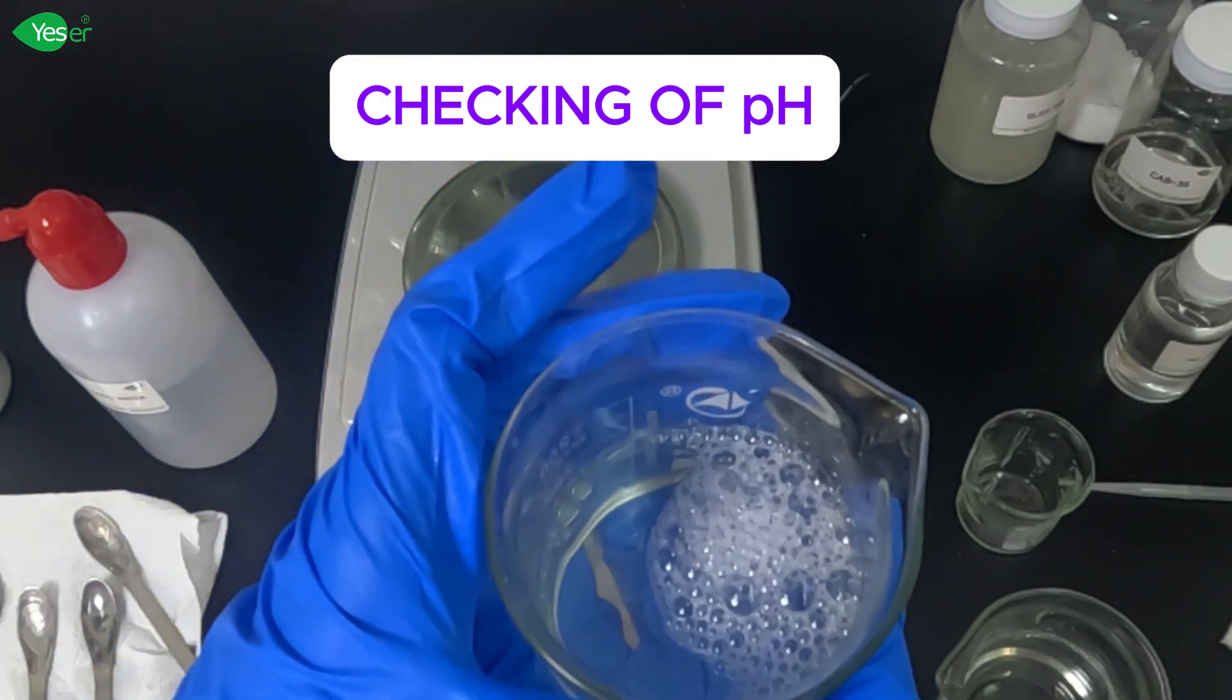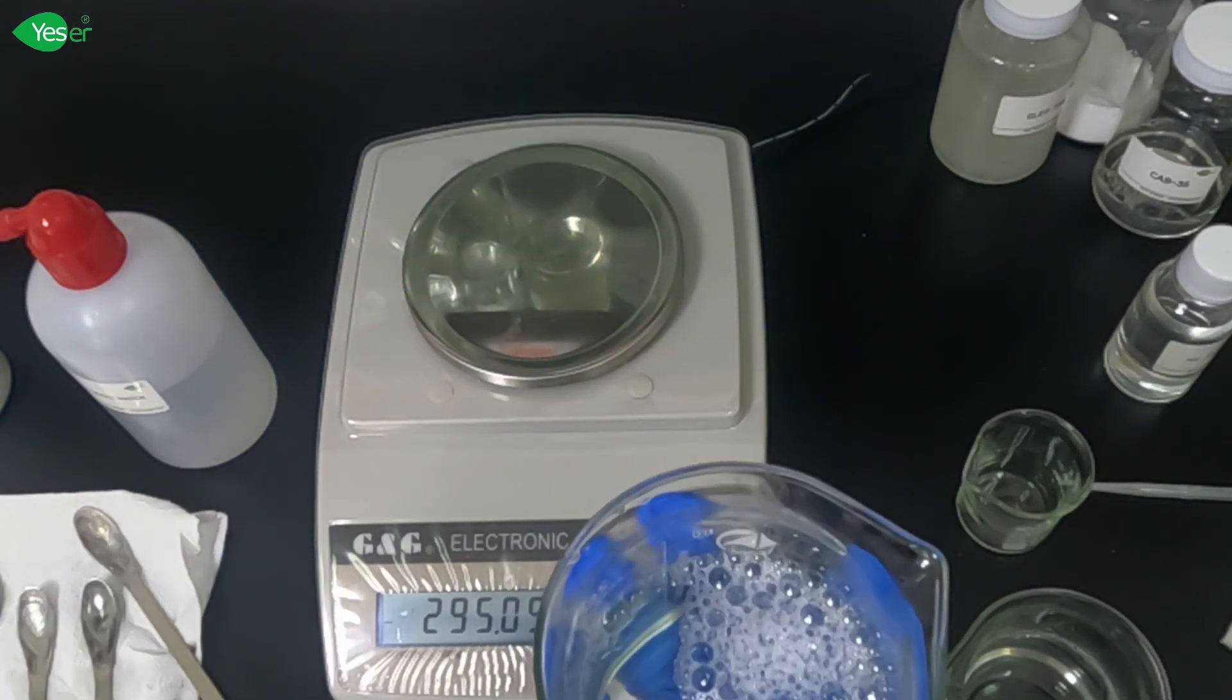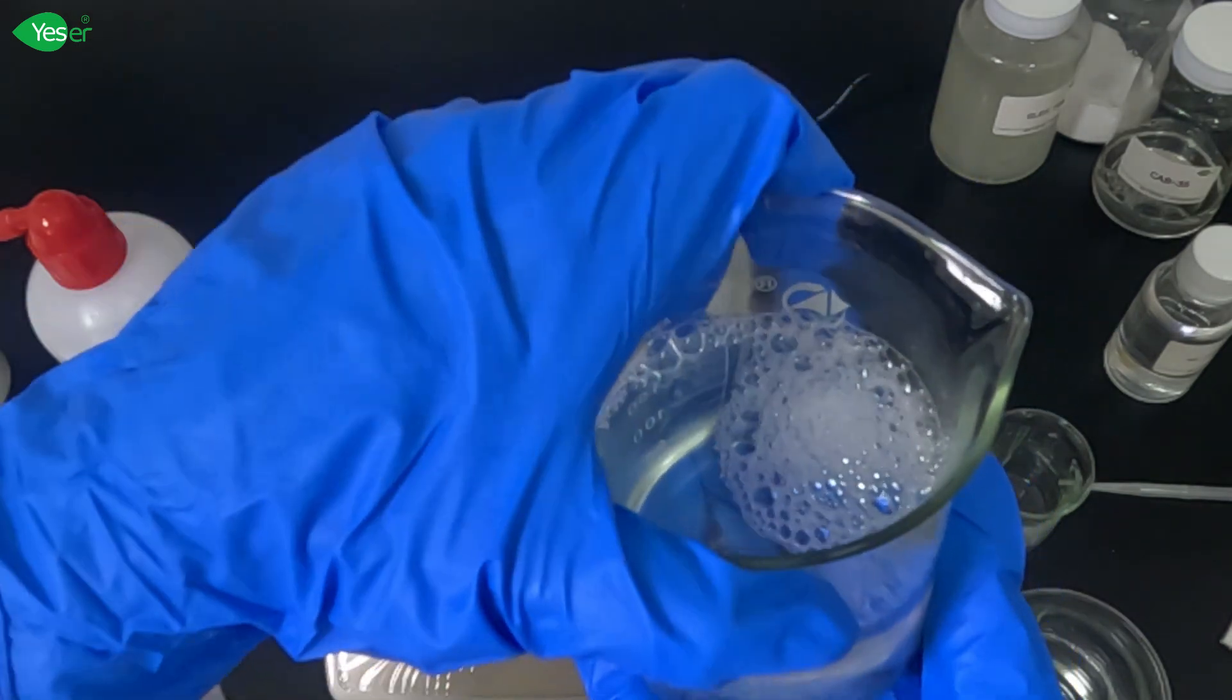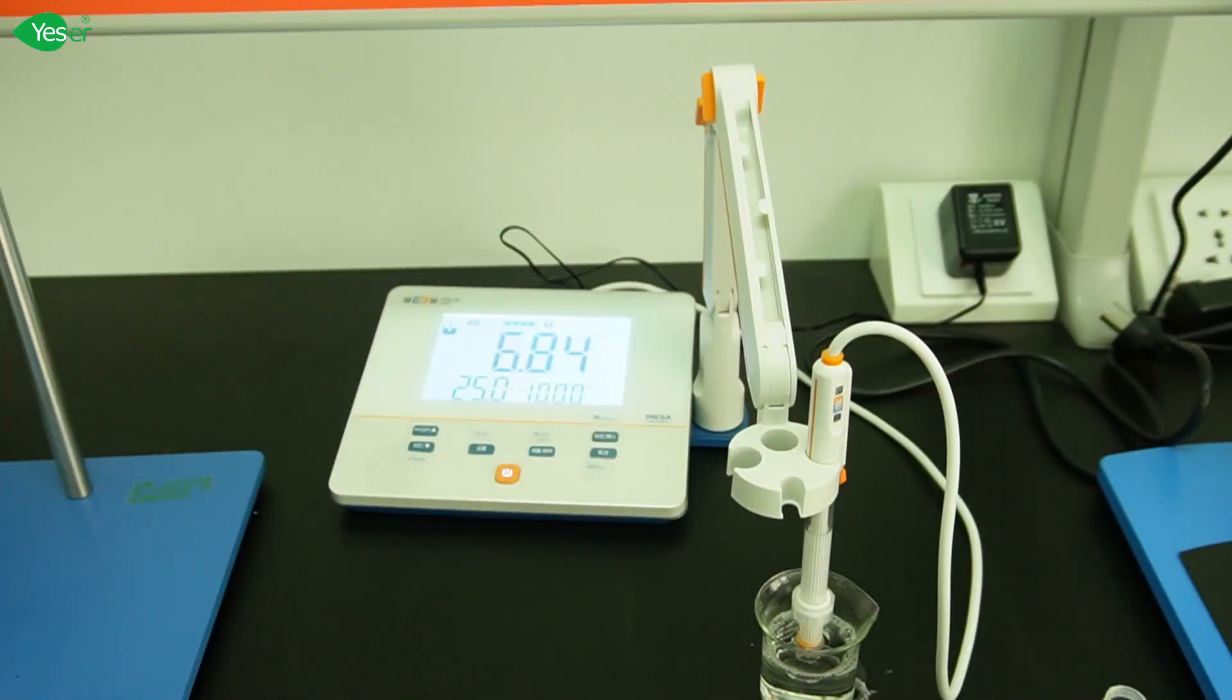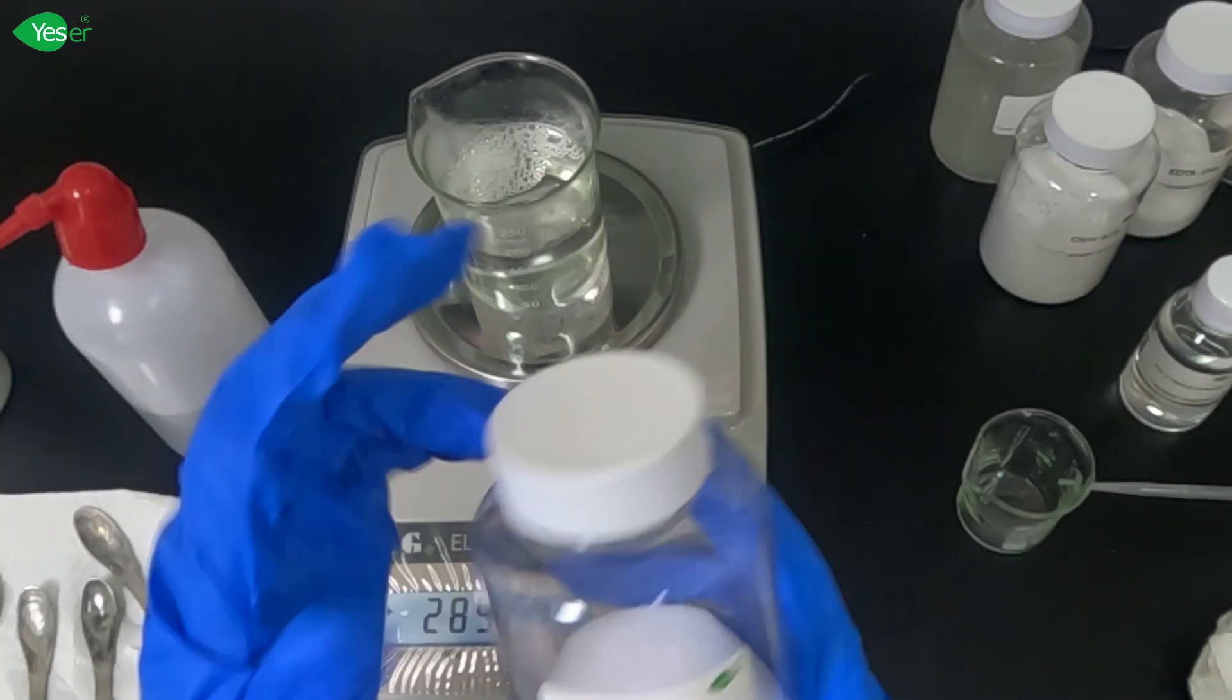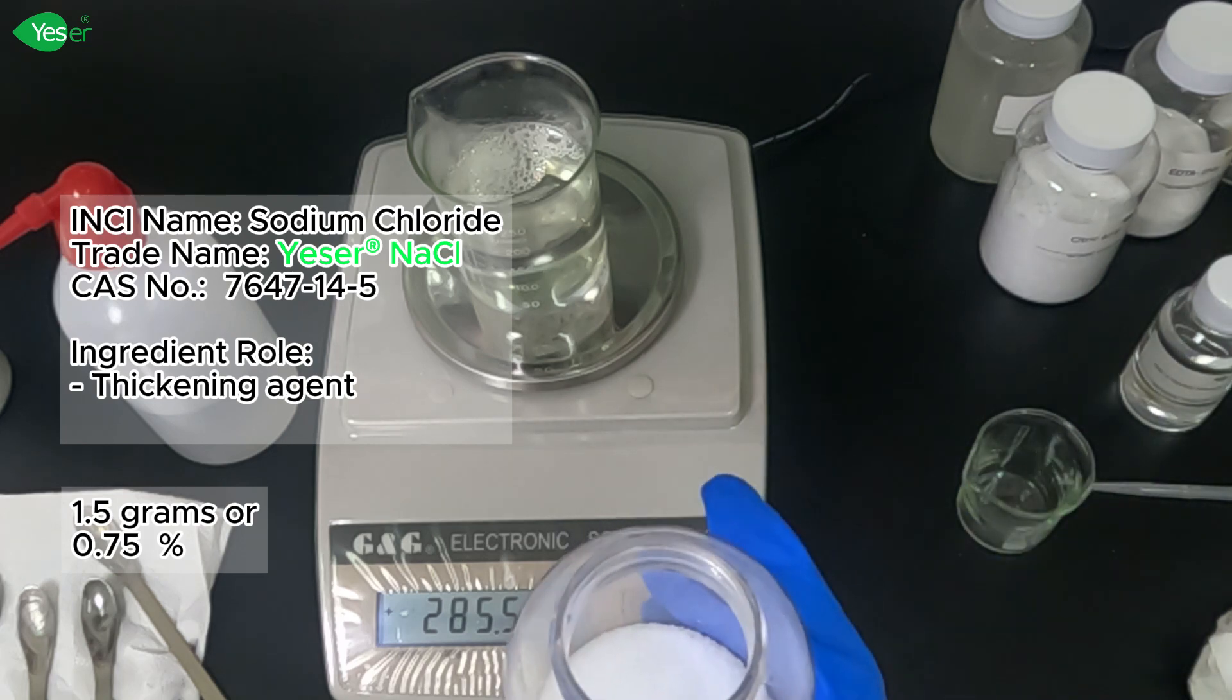Now let's check the pH of this formula. The pH range for this formula should be between 5 and 7, so we will adjust it with citric acid as necessary. Our pH is 6.84, which is within our range. We can now proceed to adding our salt or thickener for our formula. Let's add 1.5 grams of salt in our solution, gradually, until we achieve our desired viscosity.